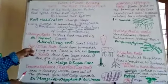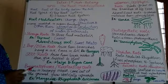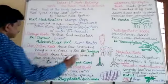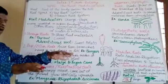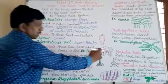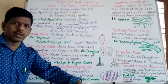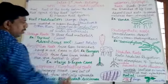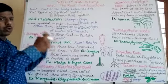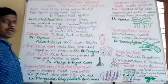Next, prop roots are pillar roots. Prop roots are the roots which arise from the branches and hang freely in the air, and fix into the soil. They give support to the plant, which is why they are known as prop roots or pillar-like roots. For example, the banyan tree.